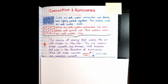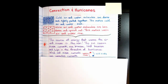The source of the energy that warms the air and oceans is, of course, the sun. The sun causes ocean currents, sea breezes, and land breezes, and it also helps in the formation of hurricanes. Wind and ocean currents are convection currents.